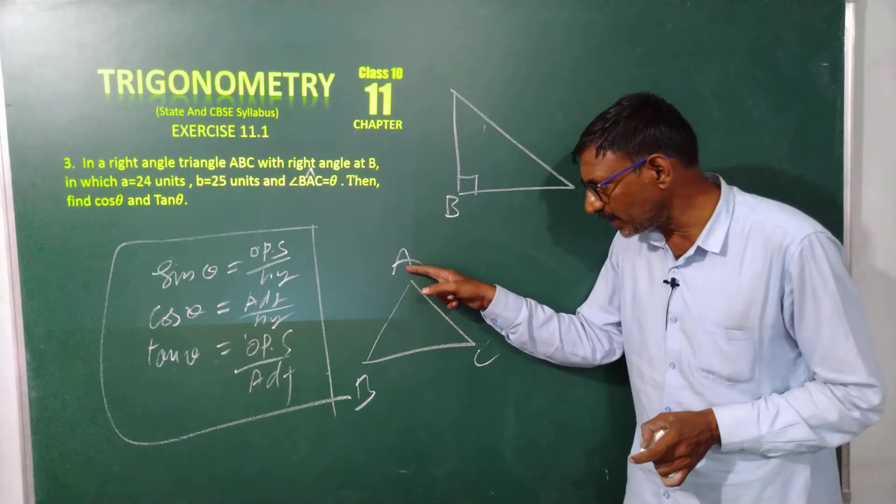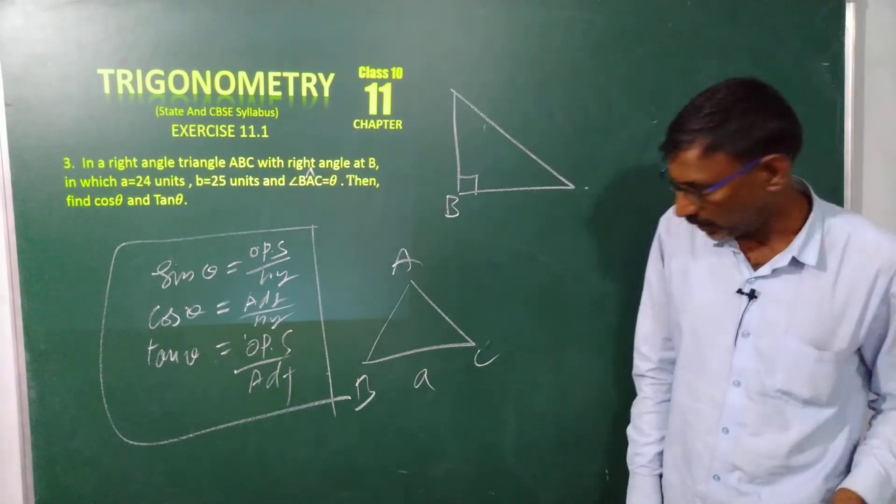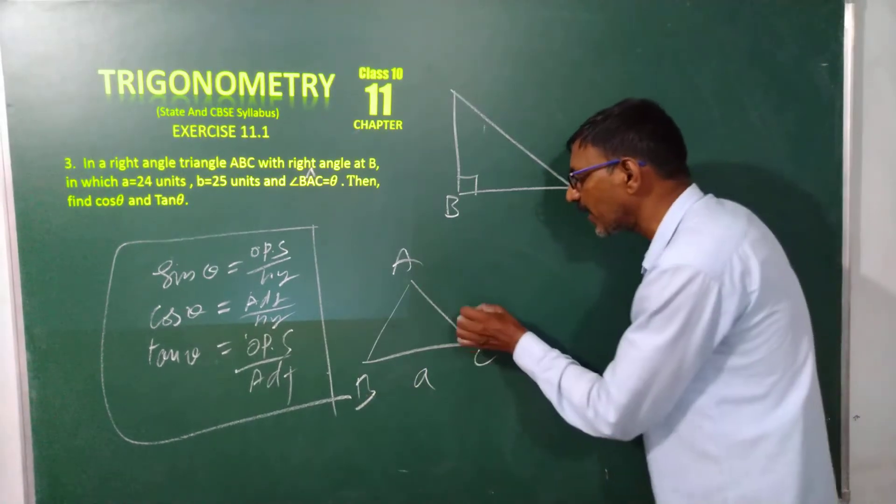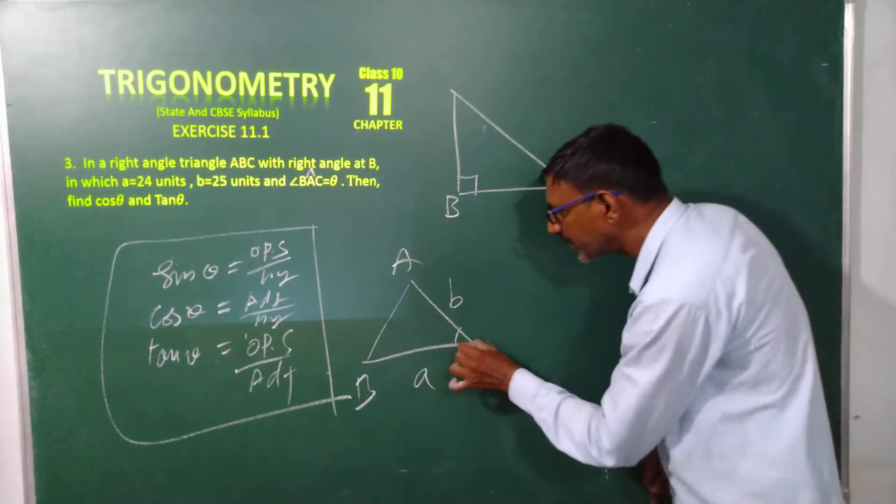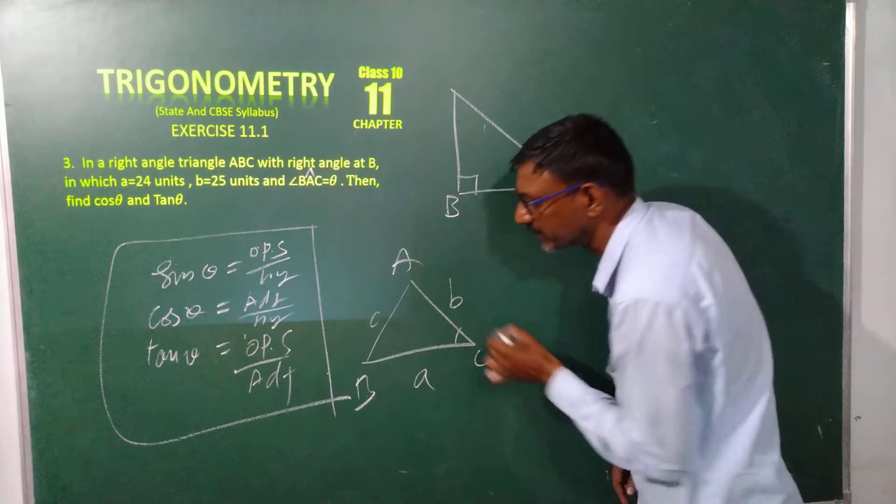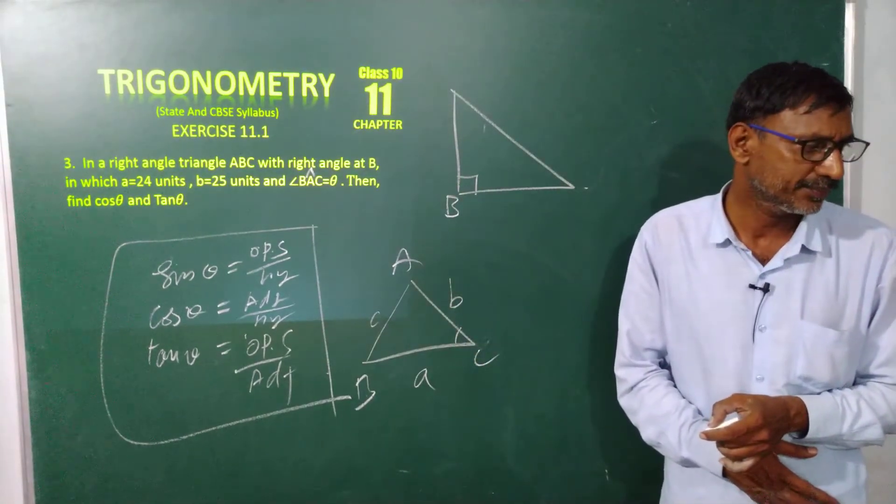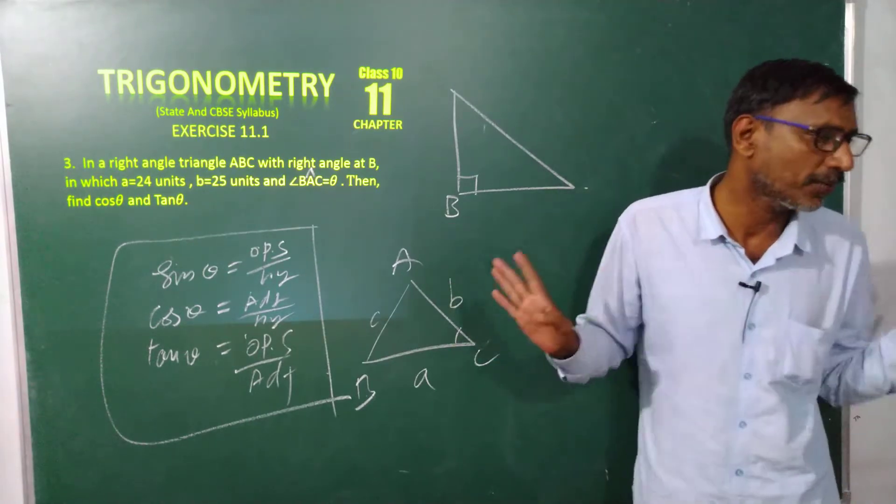The angle A opposite side is called small a. Keep in mind. Angle B, its opposite side is called small b. Angle C, its opposite side is called small c. This is the way to write the sides of triangle. This is the rule, rule for all, we have to follow.